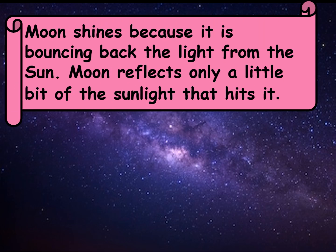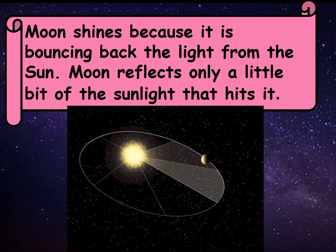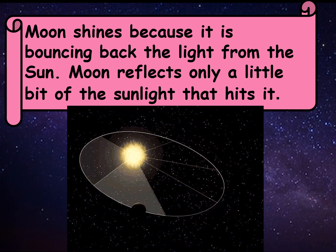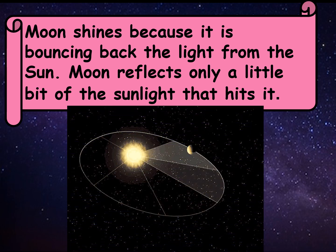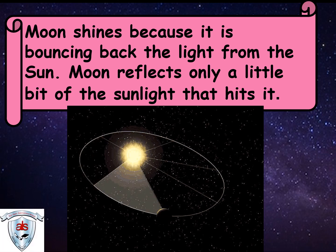So children, moon shines because it is bouncing back the light from the sun. Moon reflects only a little bit of the sunlight that hits it. As you can see in this picture, the moon is reflecting back the light which it is getting from the sun.